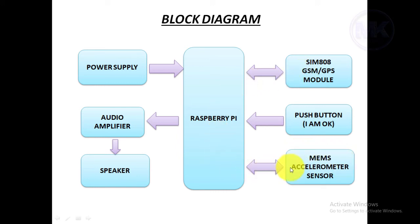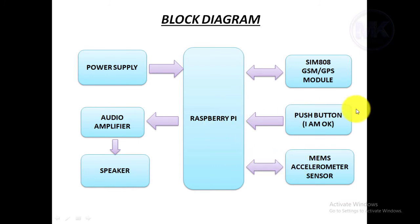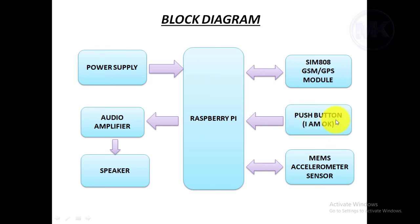After that, Raspberry Pi communicates with the MEMS accelerometer sensor. The purpose of this MEMS sensor is to measure velocity, orientation, and acceleration of a vehicle so that an accident is detected. There is also one push button attached to the Raspberry Pi — if the accident is minor, the driver will press this button so that the Raspberry Pi knows it is a minor accident and the driver is okay.